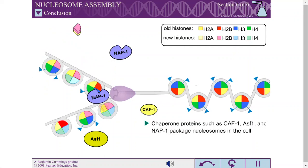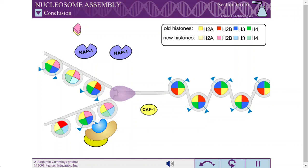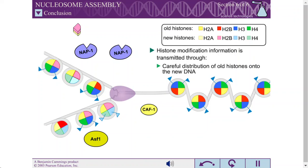The N-terminal tails of histones can be modified by the addition of methyl or acetyl groups. These modifications regulate gene accessibility and are critical for proper gene expression and cell survival. Histone modification information is transmitted from parental to daughter DNA by careful distribution of old histones onto the new DNA, coupled with the histone modifying action of bromodomain and chromodomain containing proteins.